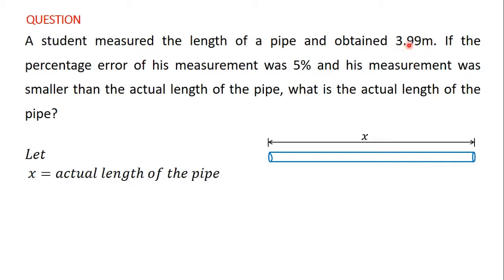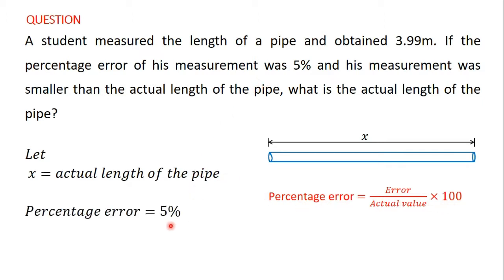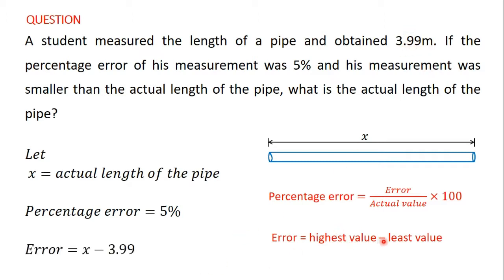The measurement the student obtained was 3.99 meters. We know that percentage error is equal to error divided by the actual value times 100. We have been given the percentage error as 5 percent. We also know that the error is equal to the highest value minus the least value. The question told us that the actual length x is bigger than 3.99, so the error is x minus 3.99, since x is the highest value and 3.99 is the least value.